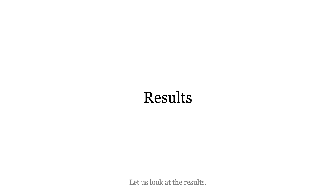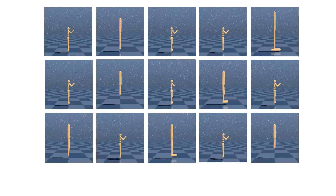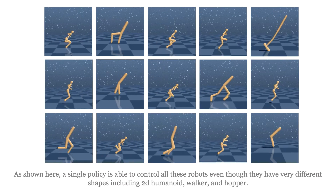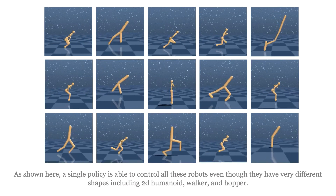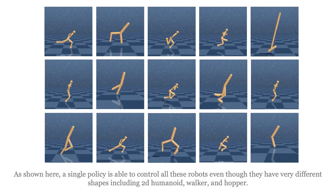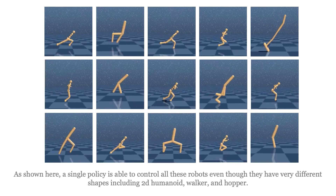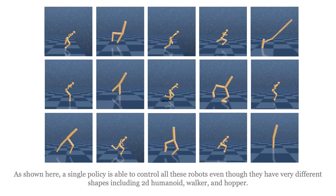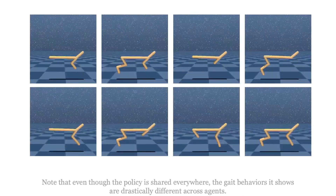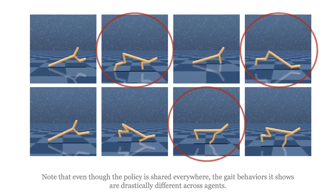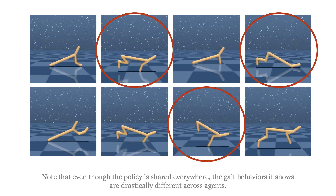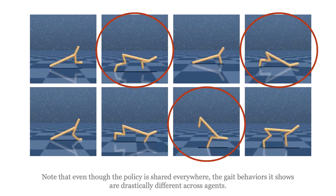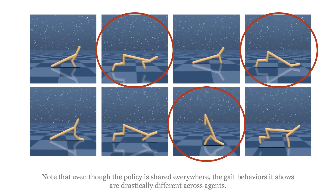Let's look at the results. A single policy is able to control all these robots even though they have very different shapes, including 2D Humanoid, Walker, and Hopper. Note that even though the policy is shared everywhere, the gait behaviors it shows are drastically different across agents.